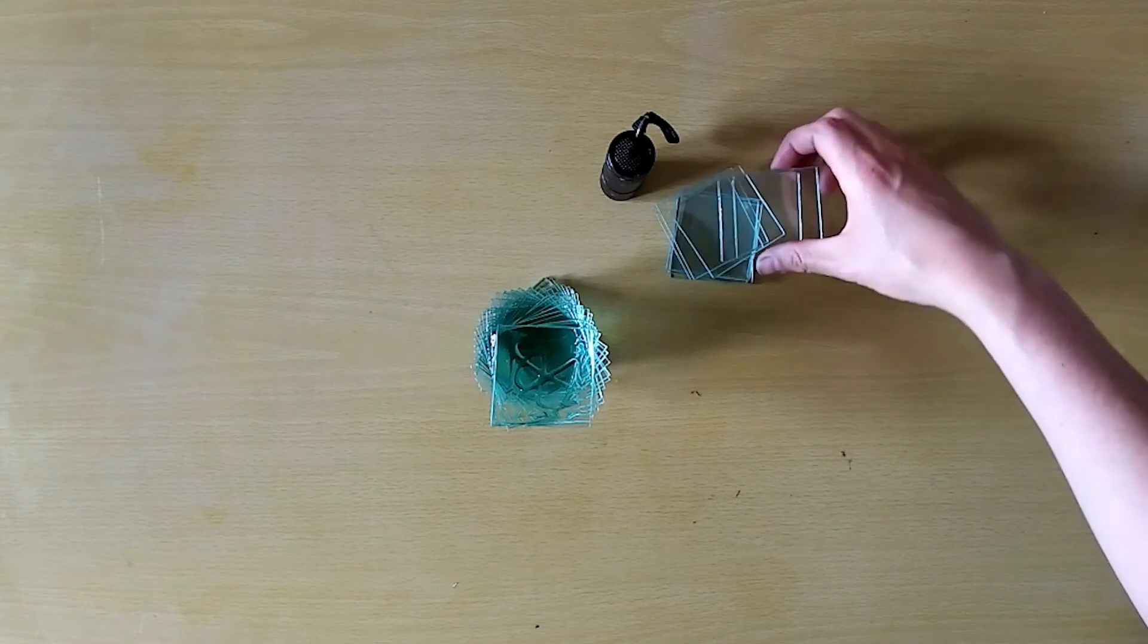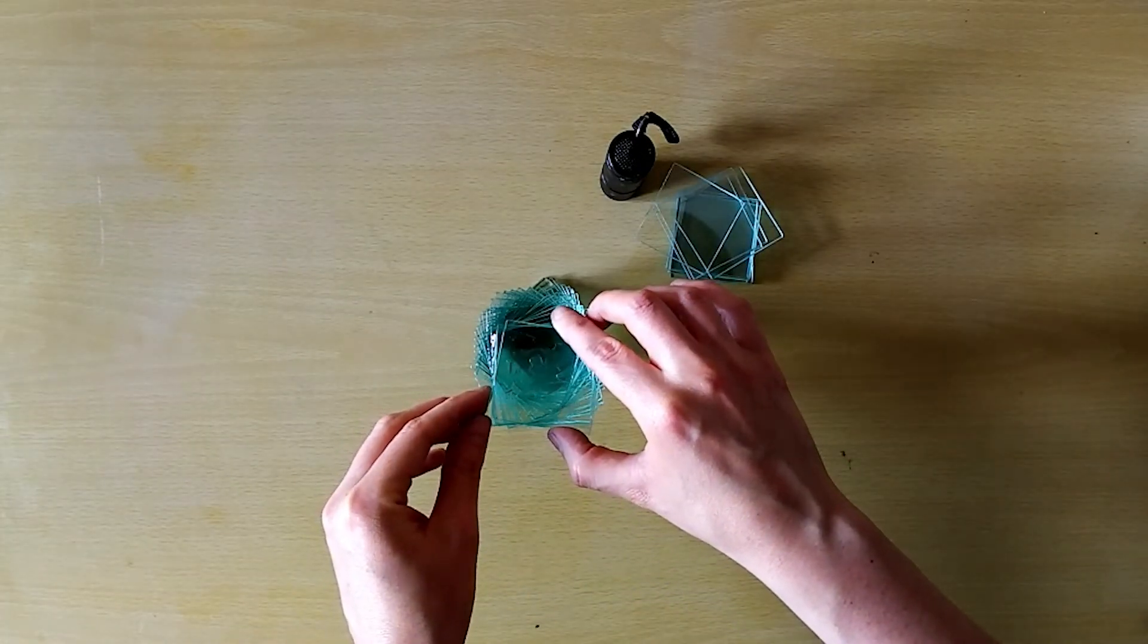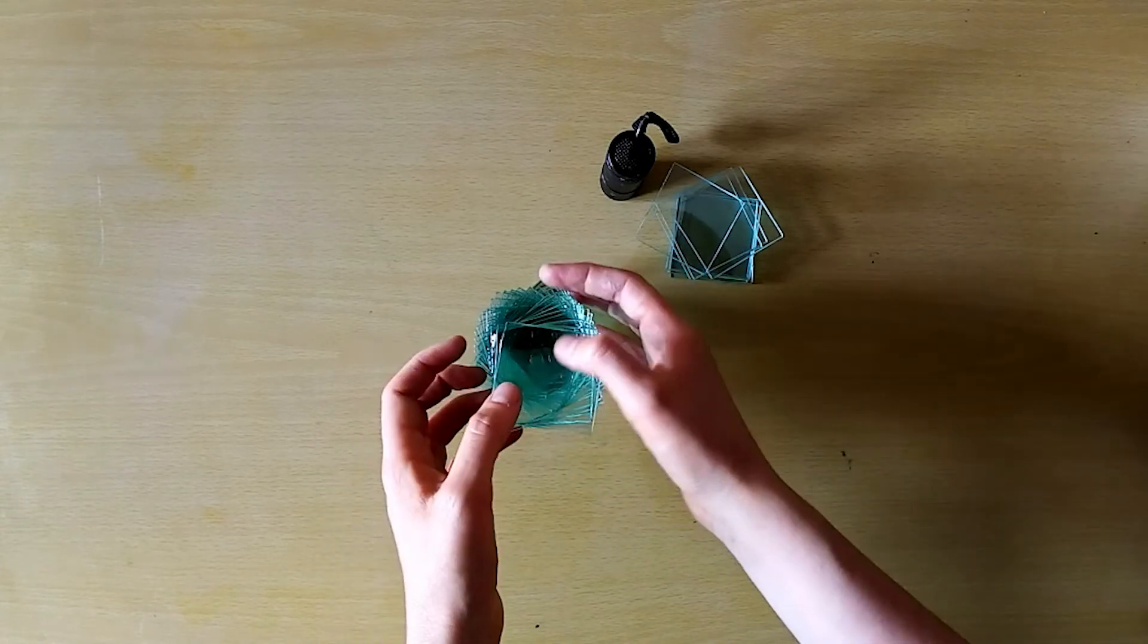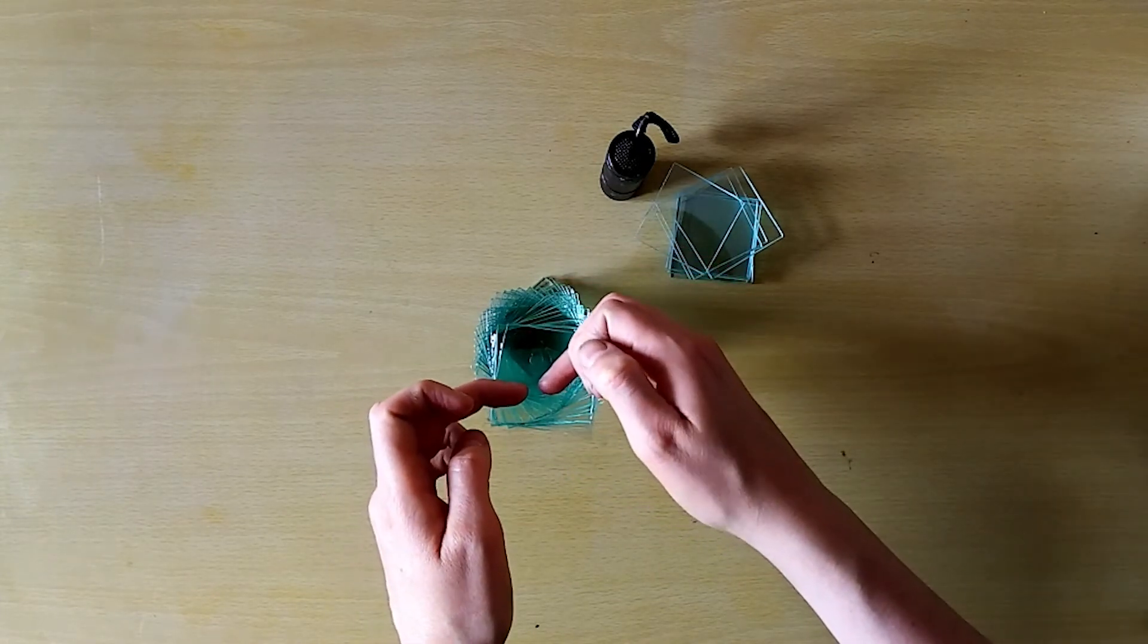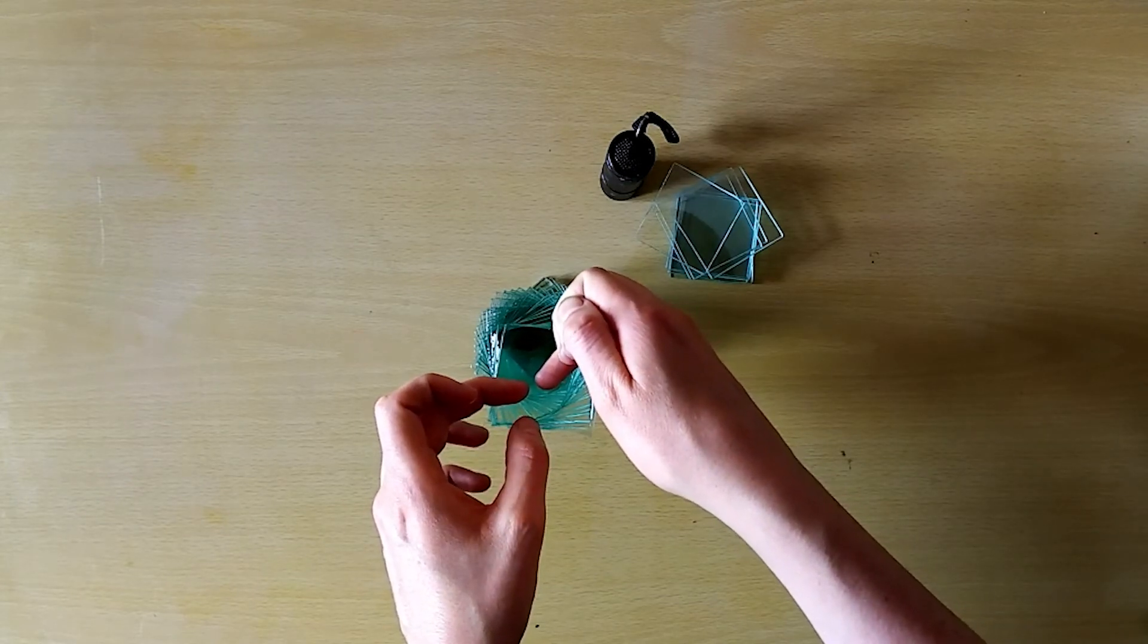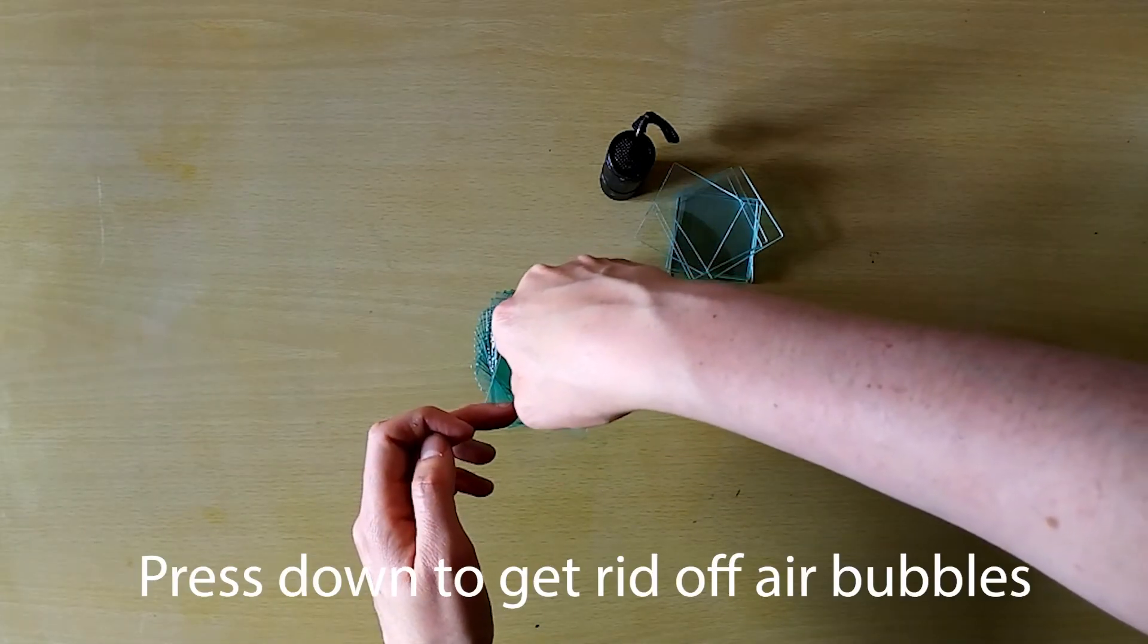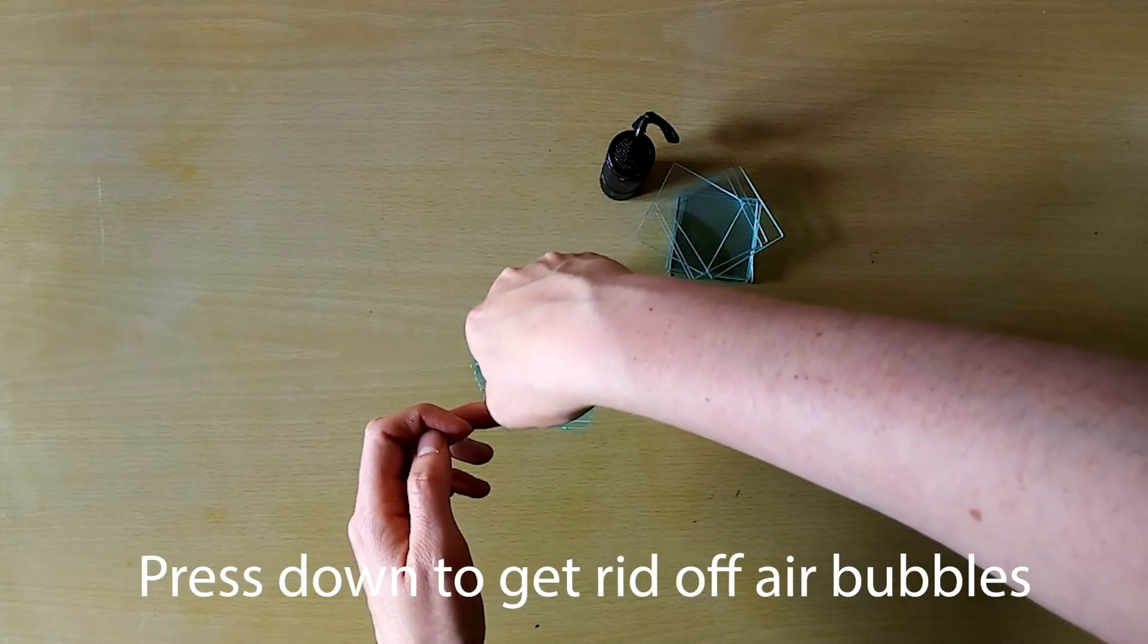I'm offsetting my glass squares a few degrees each time I put one down and that's what's going to create my spiral effect in the sculpture. Press down hard to get rid of any air bubbles.